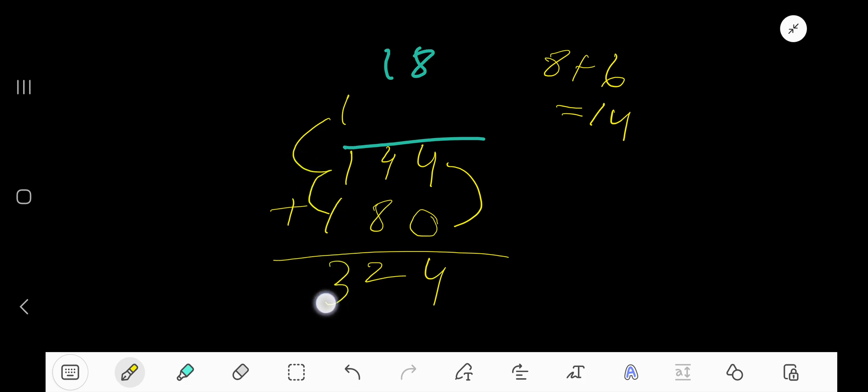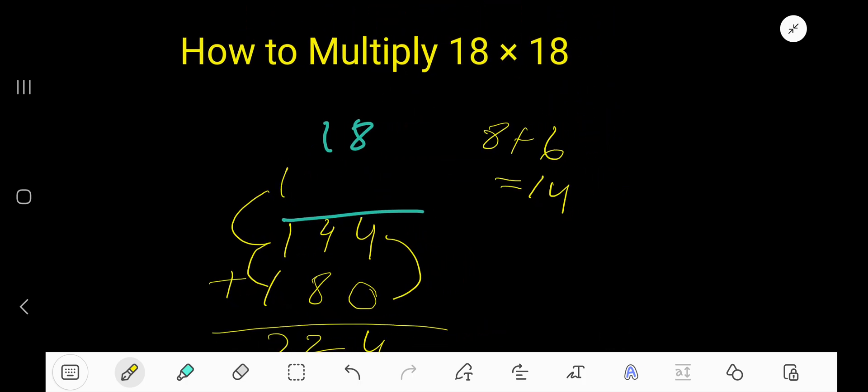That is 1, 2, 3. 324. 18 times 18 is 324.